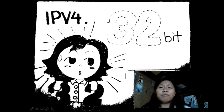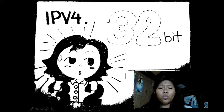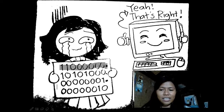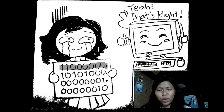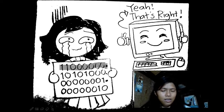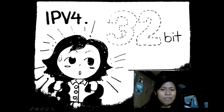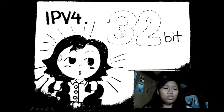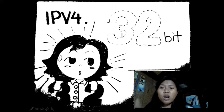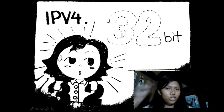IPv4 has 32 ones or zeros — that is, 32 bits. As you can see: 8 + 8 + 8 + 8 bits, and 8 times 4 equals 32. So remember, IPv4 is 32 bits.